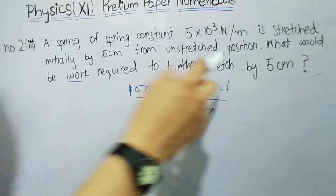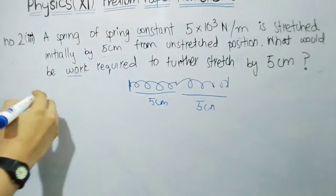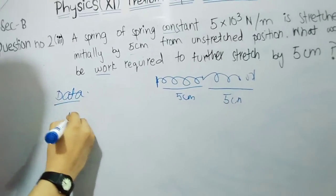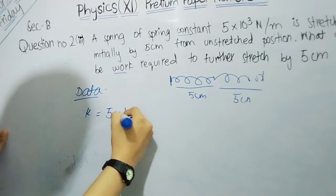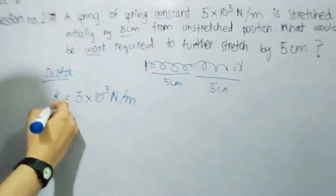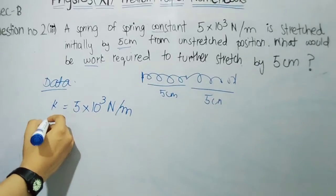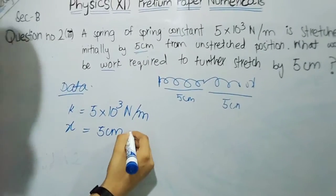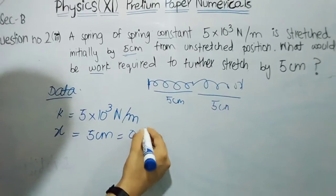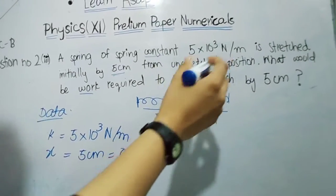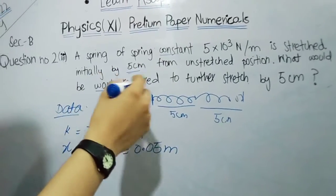We'll write down our data. We have given the spring constant, k equals 5×10³ Newton per meter. We have 5 centimeter displacement, which in other words is 0.05 meter from the unstretched position.